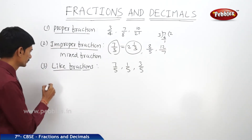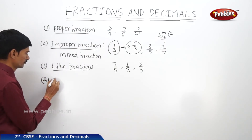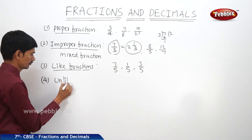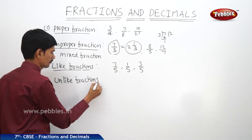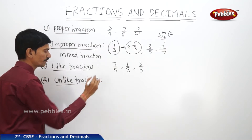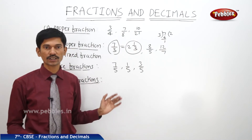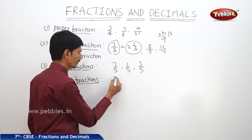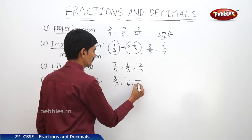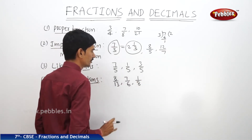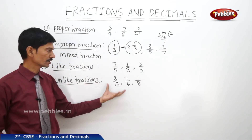Unlike fractions means the fractions whose denominators are not equal — unequal. For example, 8/30, 7/6, 1/8 and so on. These are unlike fractions because the denominators are not equal.